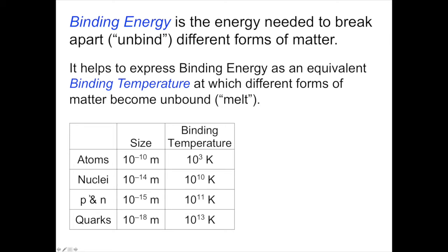Protons and neutrons can actually break apart into quarks. Protons and neutrons are made each of three different types of quarks. The typical size scale of a proton and neutron is 10^-15 meters, and have a binding temperature of about 10^11 degrees Kelvin, 100 billion degrees Kelvin.